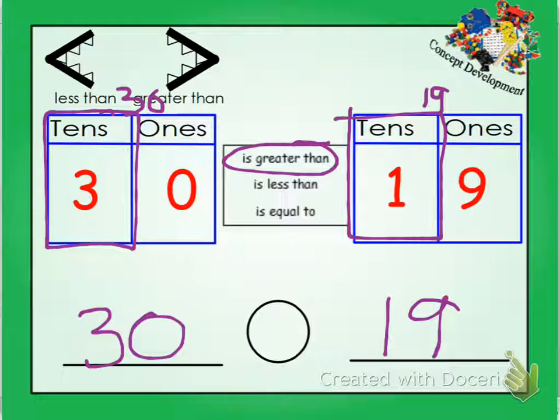Now remember, 30 is greater than 19, which means 30 is that bigger number. The alligator is really hungry. That alligator is going to eat that bigger number. So that alligator needs to be facing towards that 30. The mouth needs to be open to the 30 to where the alligator can eat it.